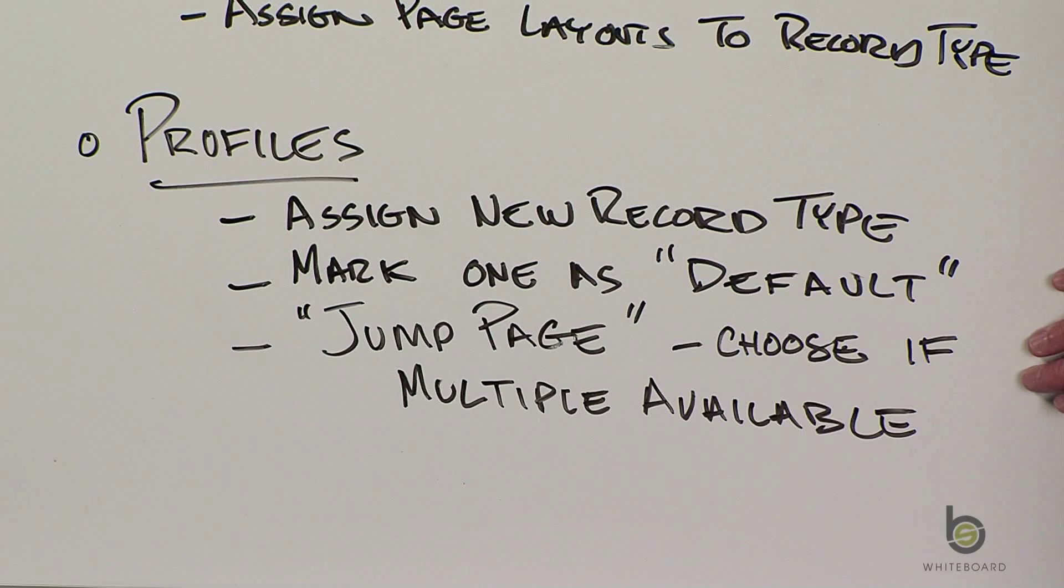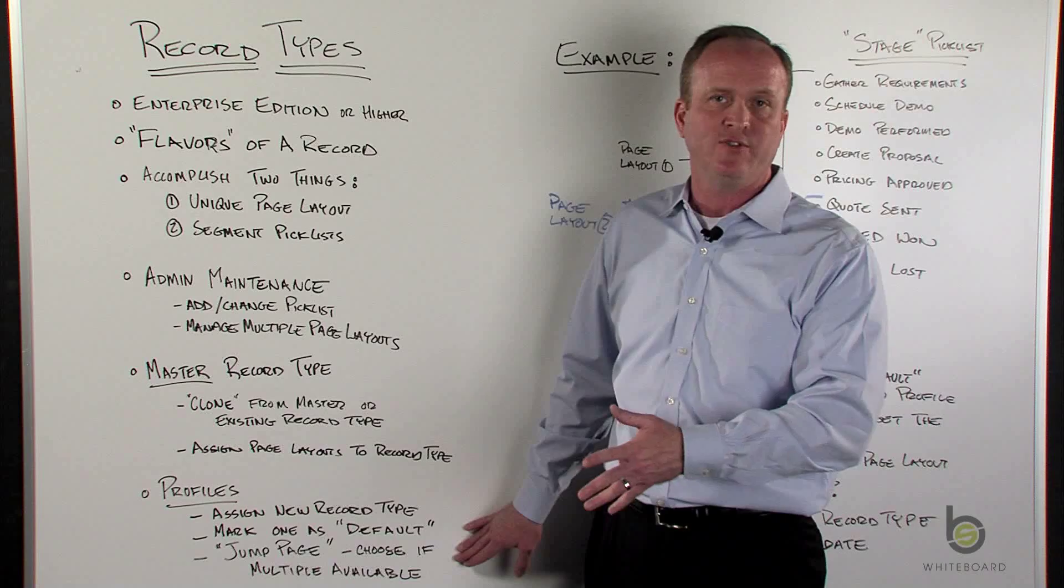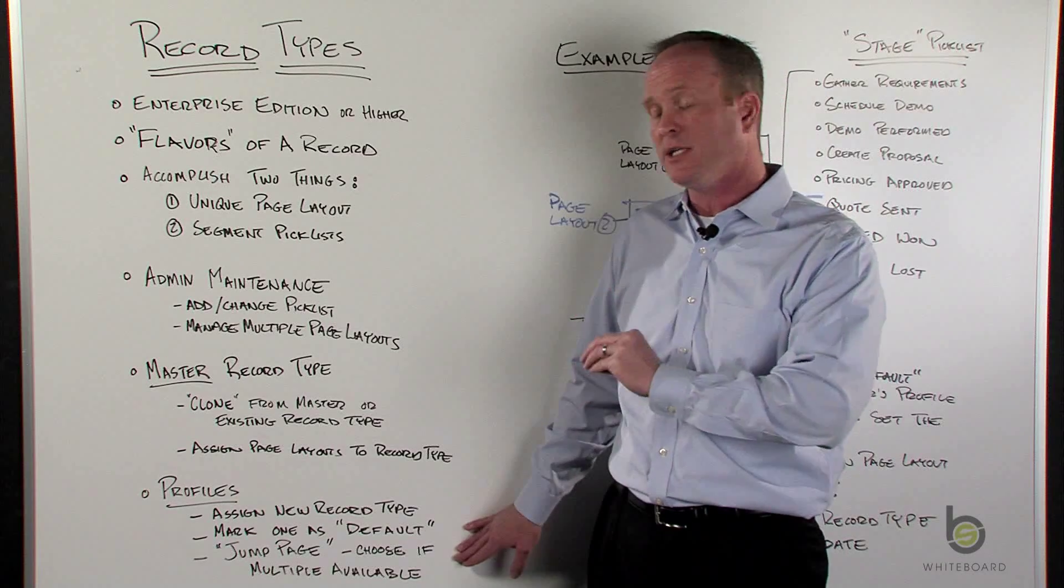So when you start working with record types, profiles start to come into play. So there's some object permissions for lead, account, contact, or a custom object where you define field level visibility and those types of things, as well as page layouts.